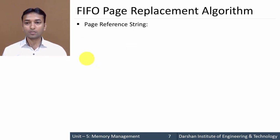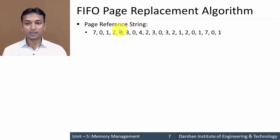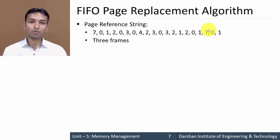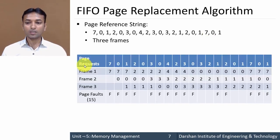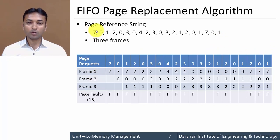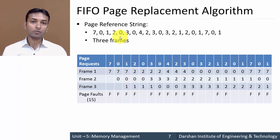Let us see an example of the FIFO page replacement algorithm. The page reference string is: 7, 0, 1, 2, 0, 3, 0, 4, 2, 3, 0, 3, 2, 1, 2, 0, 1, 7, 0, 1. We have 3 frames in our memory, so at any time we can load only 3 pages. If a fourth page arrives, we must remove one page. Here F denotes a page fault - when a new page must be loaded into a frame.